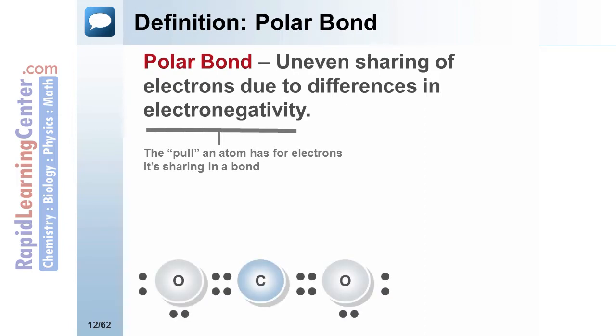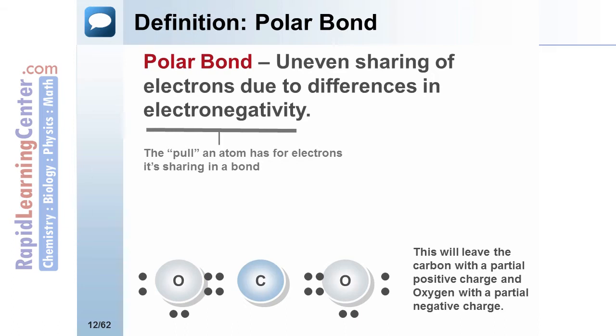This causes the more electronegative atom to have a slightly negative charge, as there are more electrons closer to its nucleus. In this example, oxygen is more electronegative than carbon. The electrons will move slightly closer to the oxygen. This will leave carbon with a partial positive charge and the oxygens with a partial negative charge.